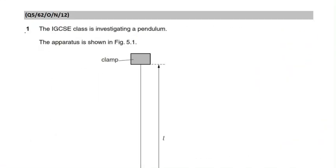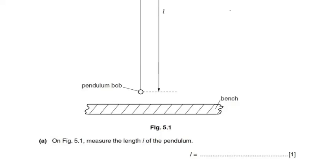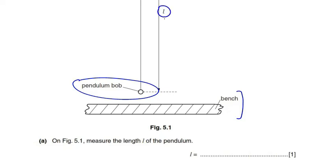This is the first question on oscillations. The question says that the IGCSE class is investigating a pendulum. The pendulum is shown in figure 5.1 — this is the pendulum bob held above the bench, and the length of the pendulum has been denoted by small l.